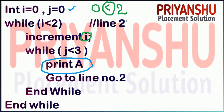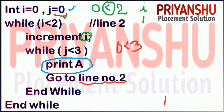Increment I — the value of I is now 1. Then check: while j is less than 3. j is 0, and 0 is less than 3, so condition is true — print 'a' one time. Then go to line 2 — note there is a j++ here that I forgot to write initially, sorry for that. After j is incremented, j becomes 1.